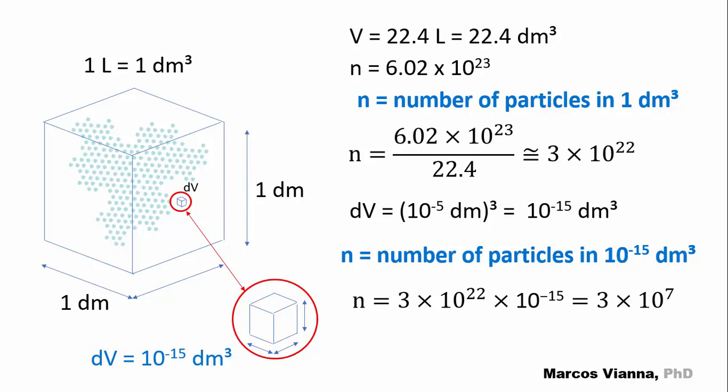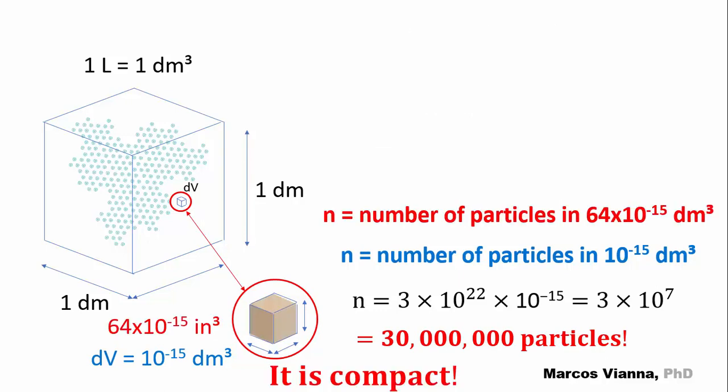Let's just stop to process the magnitude of this number, 30 billion particles. Okay, let's agree, it's a very compact DV.